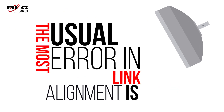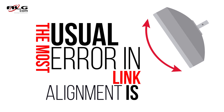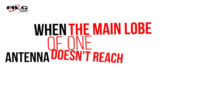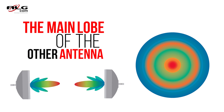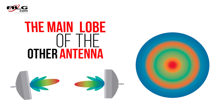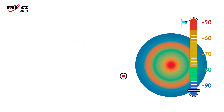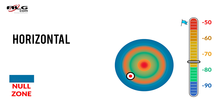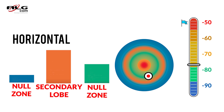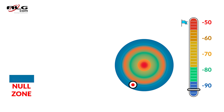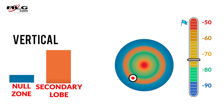The most usual error in link alignment happens when the main lobe of one antenna doesn't reach the main lobe of the other one. Pay attention in the example. The antenna's main lobe reaches new zones and the secondary lobes, but it doesn't reach the main lobe of the other antenna. This occurs both horizontally and vertically.